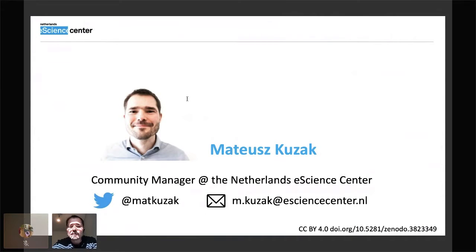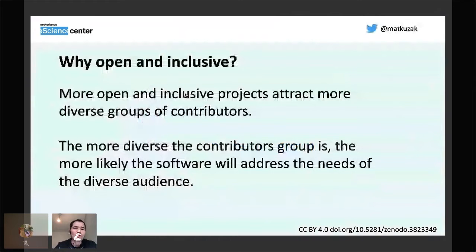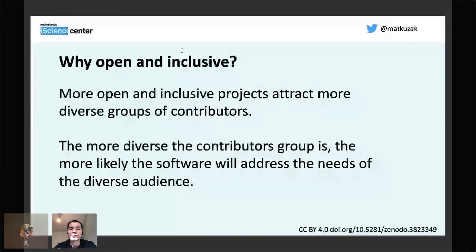That's something we would really like to change, and today I'll talk about how we can improve it for research software. The things I'll discuss can apply to other software as well, and to research culture more broadly. Why open and inclusive? First, I think it's the right way to do it, but also pragmatically, we want to attract a more diverse group of contributors and users.